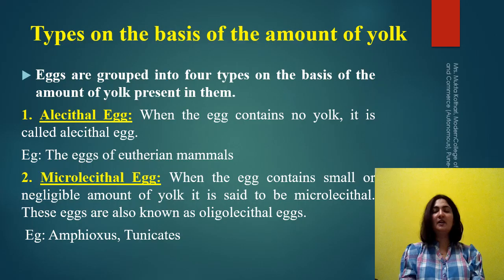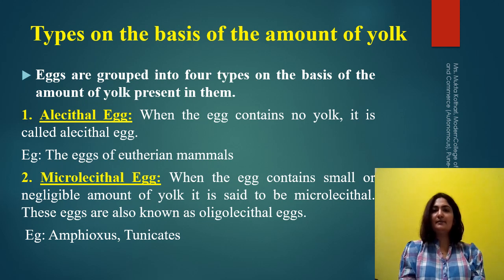We all know that egg cells are female gametes, and this female gamete contains a haploid nucleus, ooplasm, egg cell membrane, and some other membranes which will be surrounding this egg cell membrane. Inside the ooplasm there is yolk.